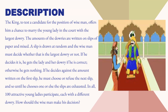The king wants to test a candidate for the position of a wise man, and he offers him the chance to marry a young lady with the largest dowry. The amounts of the dowries are written on slips of paper, they are mixed, and the slips are taken out randomly. The wise man has to decide whether each slip is the largest dowry or not. If he decides it is the largest, he gets to marry the lady and receives the dowry if he is correct; but if he is wrong, he gets nothing.